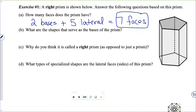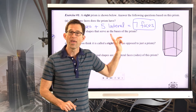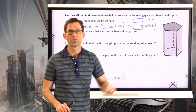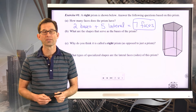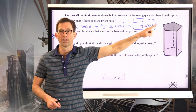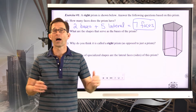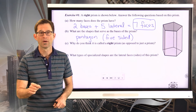Of course we have seven faces: a five-sided figure on top, a five-sided figure on the bottom — that's two bases — and for every side of that five-sided figure, we have one lateral face. For letter B, what are the shapes that serve as the bases of the prism? A five-sided polygon is called a pentagon, so you could call this a pentagon prism.